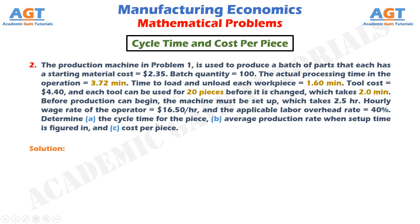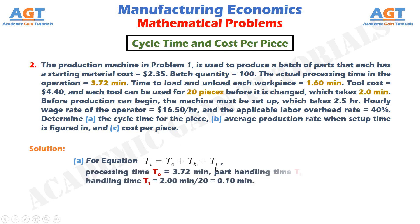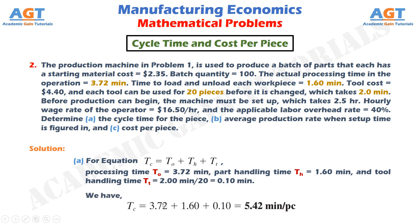For part (a), to determine the cycle time for the piece, the equation is: t_c = t_o + t_h + t_t. Processing time t_o = 3.72 minutes, part handling time t_h = 1.60 minutes, and tool handling time t_t = 2.00 minutes divided by 20 pieces = 0.10 minute. Putting the values: cycle time t_c = 3.72 + 1.60 + 0.10 = 5.42 minutes per piece.